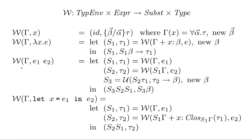For function application, we have two expressions E1 and E2. We first call Algorithm W on E1 with the context, getting substitution S1 and type tau1. Then we call it on E2, but we pass in S1 applied to the context first. This ensures any constraints learned from E1 are incorporated when inferring E2, so if something conflicts in E2 we'll catch the error.